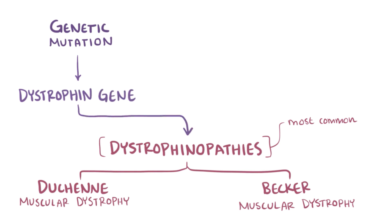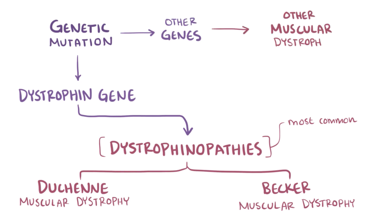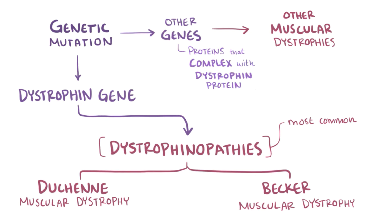In addition to those two, genetic mutations in other genes are responsible for several dozen other muscular dystrophies, some of which code for proteins that form a protein complex with dystrophin protein. These other muscular dystrophies, therefore, end up causing a lot of the same symptoms as the dystrophinopathies.